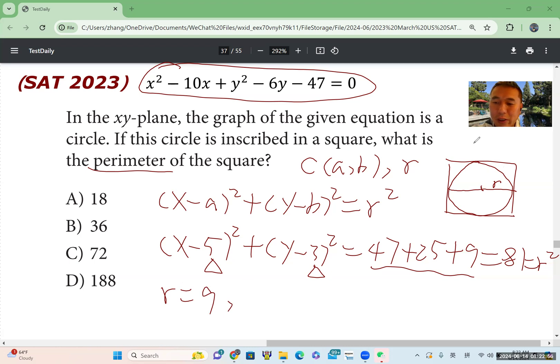If we call the side of the square s, then s equals 2r. So that means s equals 18. Then perimeter of the square is equal to 4s, which equals 72. So the answer is C.